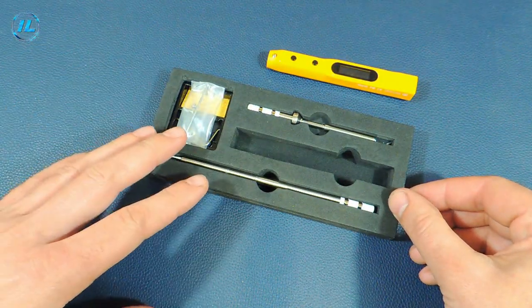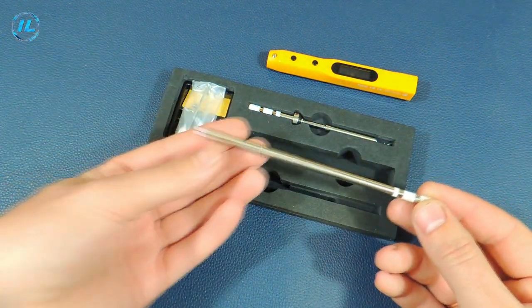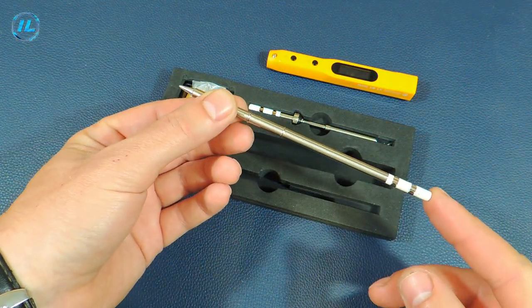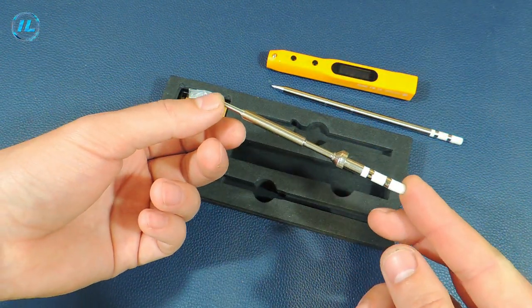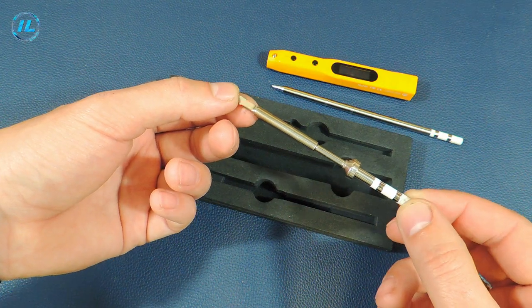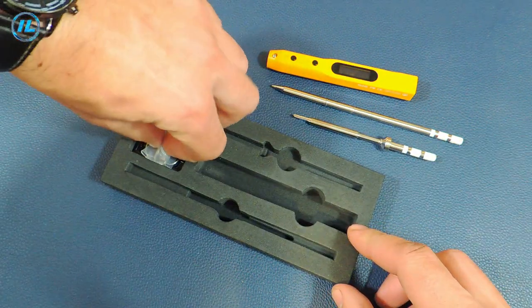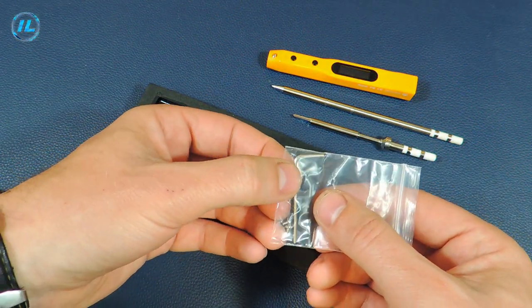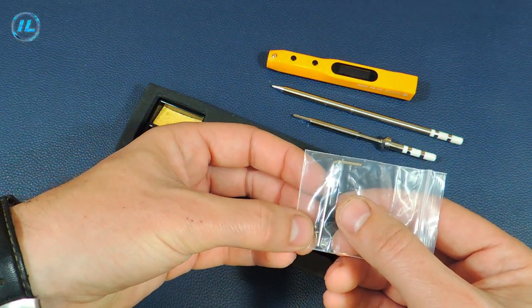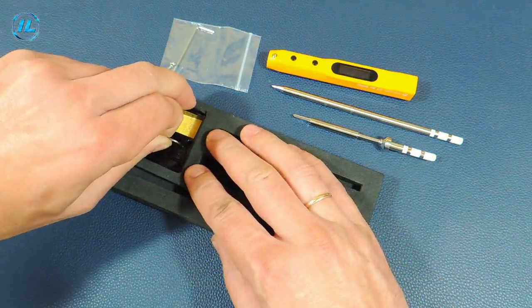Also included with this soldering iron are two tips. The first type of tip is T12, and another type of tip that can be used in this soldering iron is TS. Also included is a hex key for fixing the tips, and a small stand for a soldering iron.